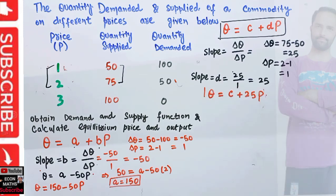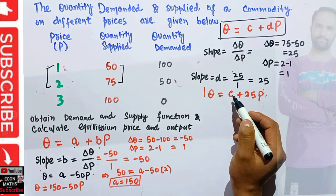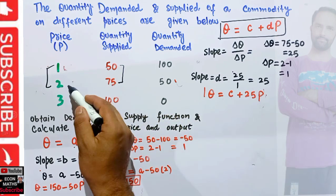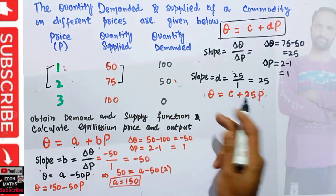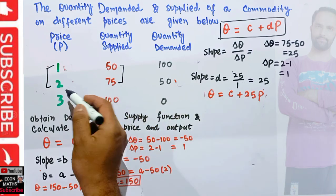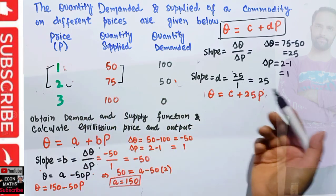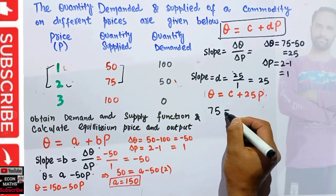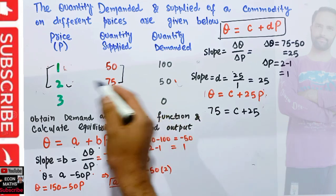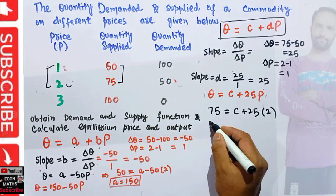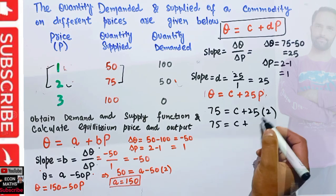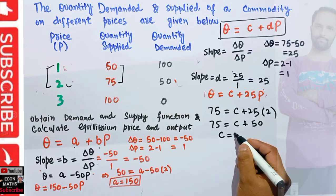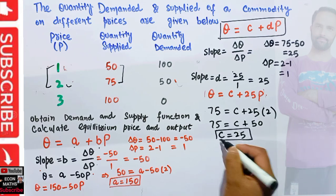Now we need to find the value of C. To find C, plug any price and quantity supplied pair into the equation. Let us take quantity supplied of 75 at a price of 2. So 75 is equal to C plus 25 times 2, which gives 75 equals C plus 50, so C equals 75 minus 50, which comes out to be 25. This is our quantity intercept.